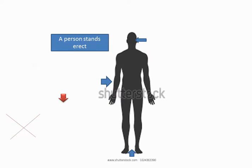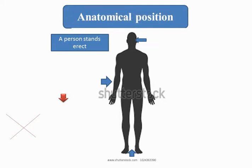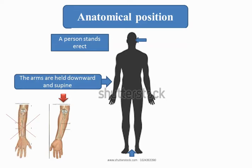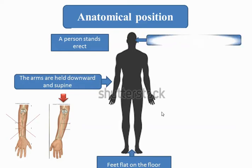If we want to study the body or surface body anatomy, we must have a special position called the anatomical position. In this position, the body must stand erect, and the arms are held down and supinated — supinated means the palm is facing forward. Our feet must be flat on the floor and slightly separated, and the face is directed forward.